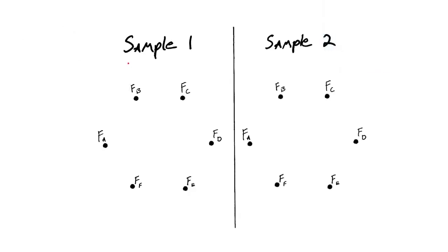So suppose we have two samples - sample one and sample two. Within these samples we have features A, B, C, and so on all the way through F. Similarly in sample two we have the same six features. If we're interested in differential abundance, we might be interested in how feature A in sample one changes in sample two. If feature A actually increases in sample two, a consequence is all of the other features in sample two must decrease.